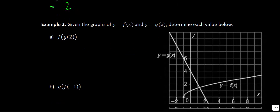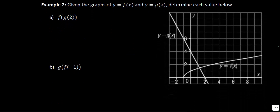Now let's look at how we do this with a graph. We have our function y equals g of x and y equals f of x. We want to find f of g of 2. First, look at what happens at x equals 2 in the function g — the output value is 0, so this becomes f of 0. Then, looking at f with an input of 0, the output value is 1. So the answer is 1.